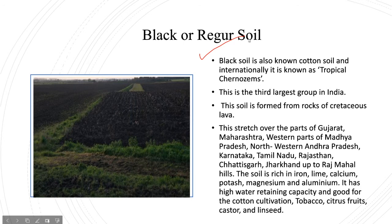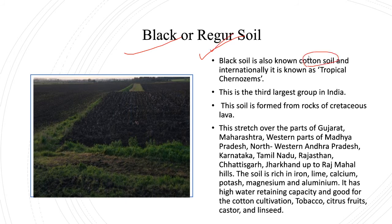Next, Black Soil, also called Regur Soil — very very important. Most questions are from black soil. It is found in the Deccan Plateau region. Black soil is formed due to volcanic lava. The black color is due to a compound called Titaniferous Magnetite. Black soil has three names: Black Soil, Regur Soil, and Cotton Soil.